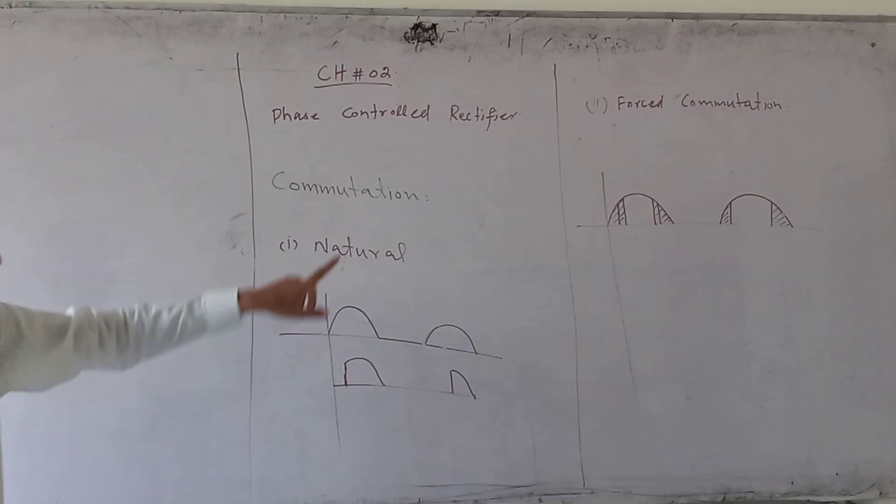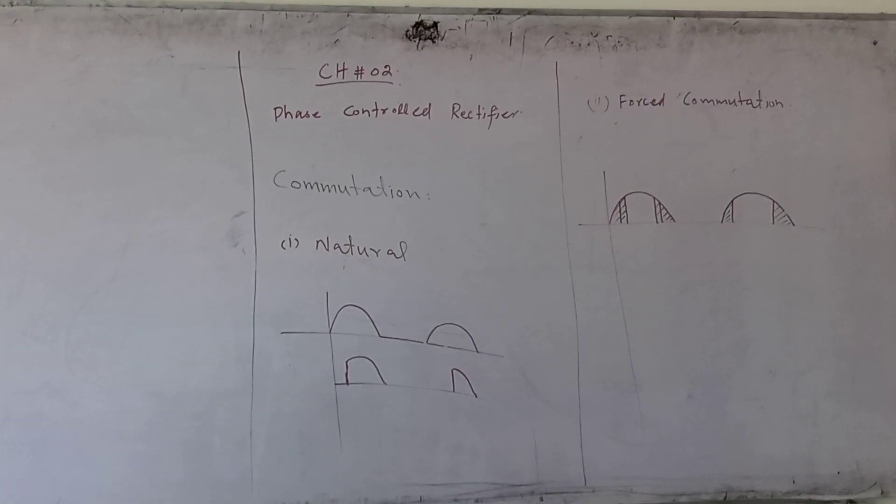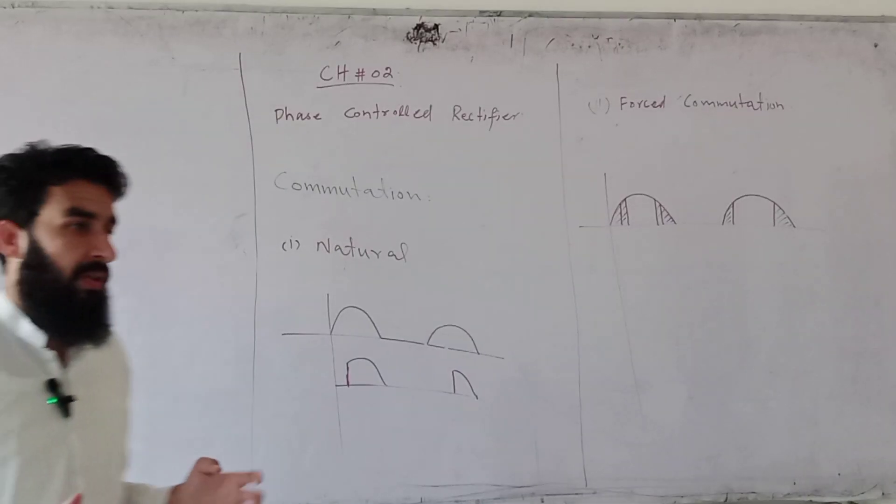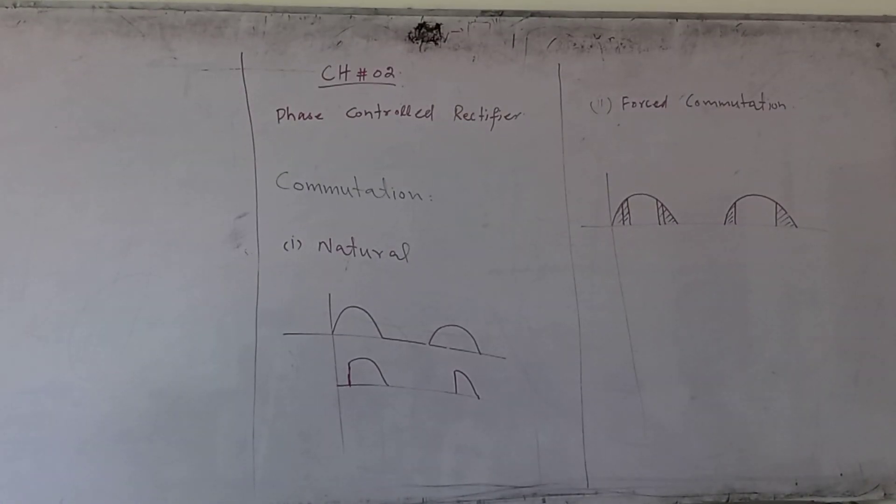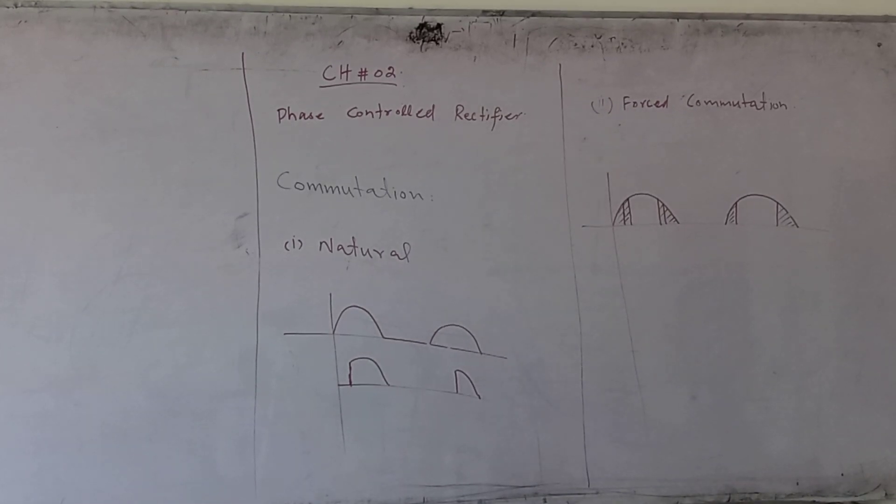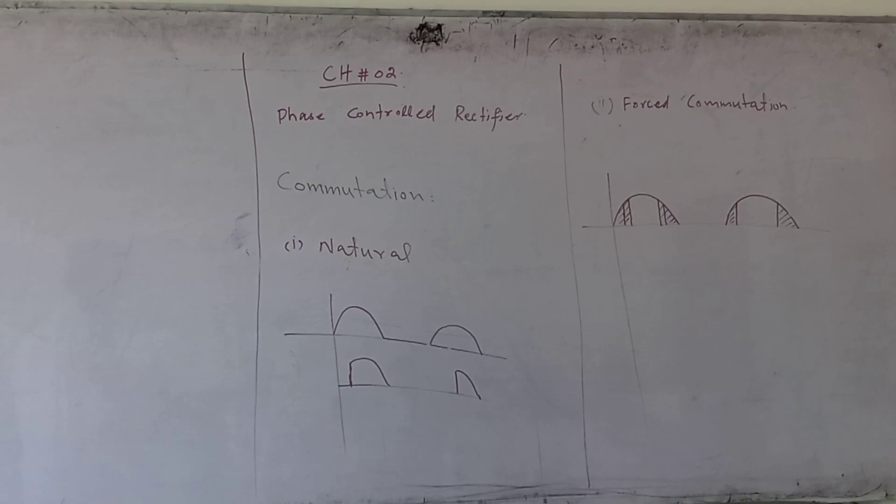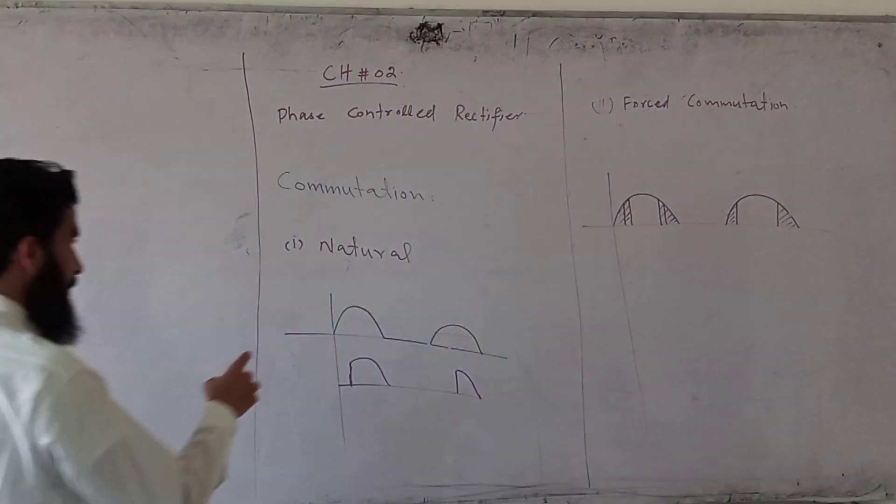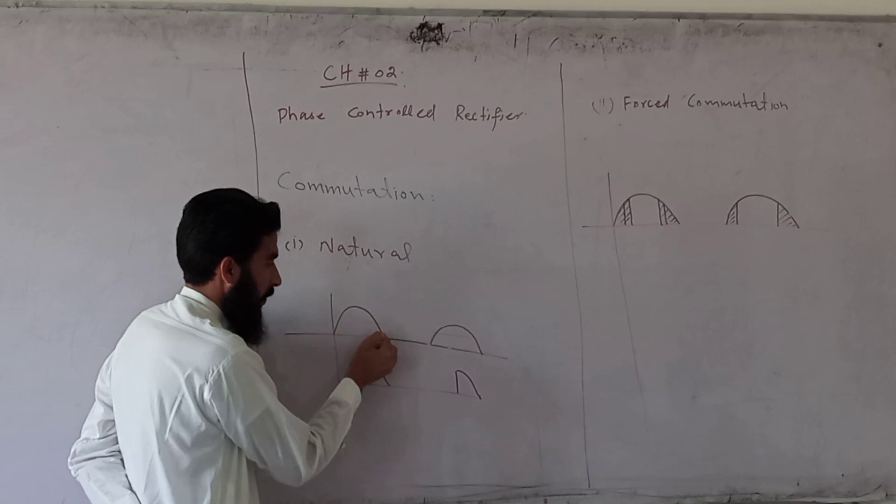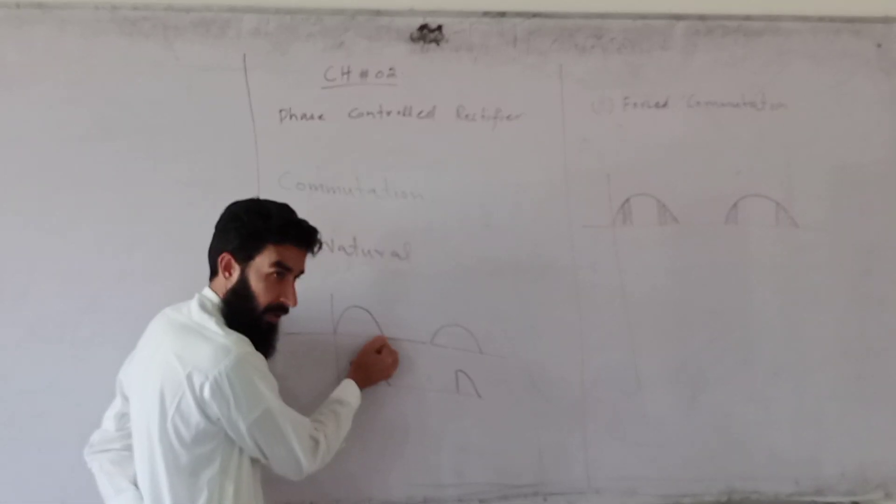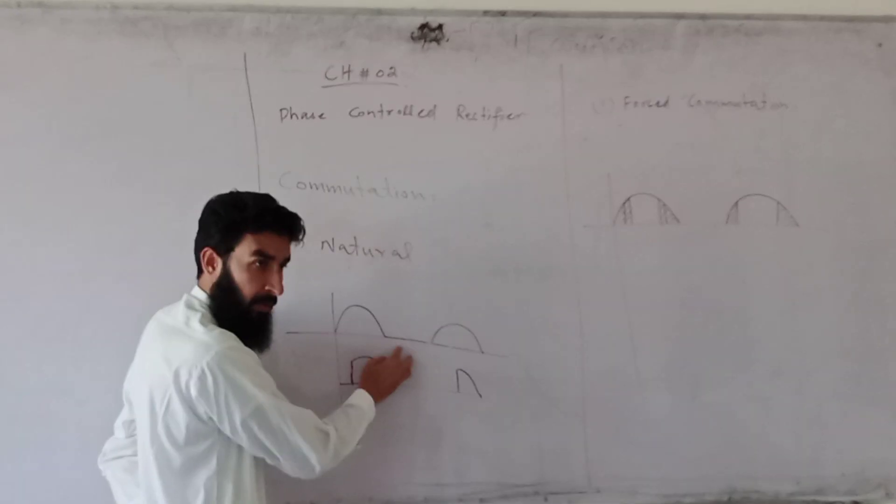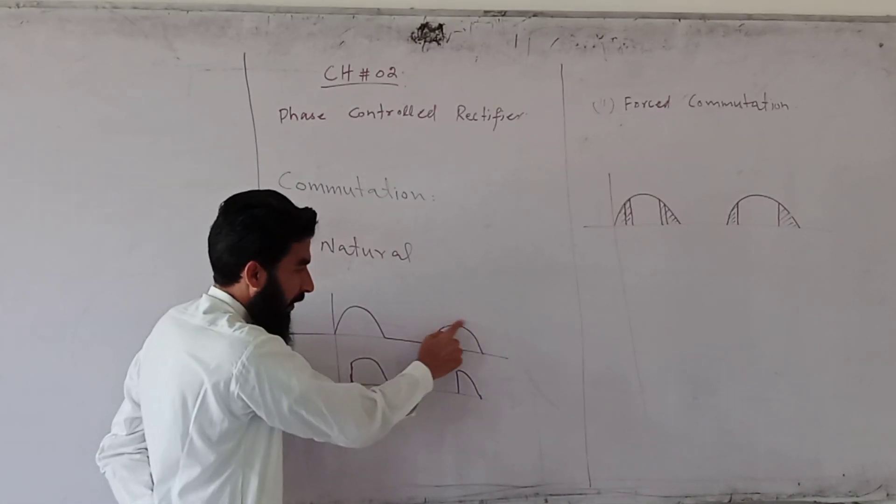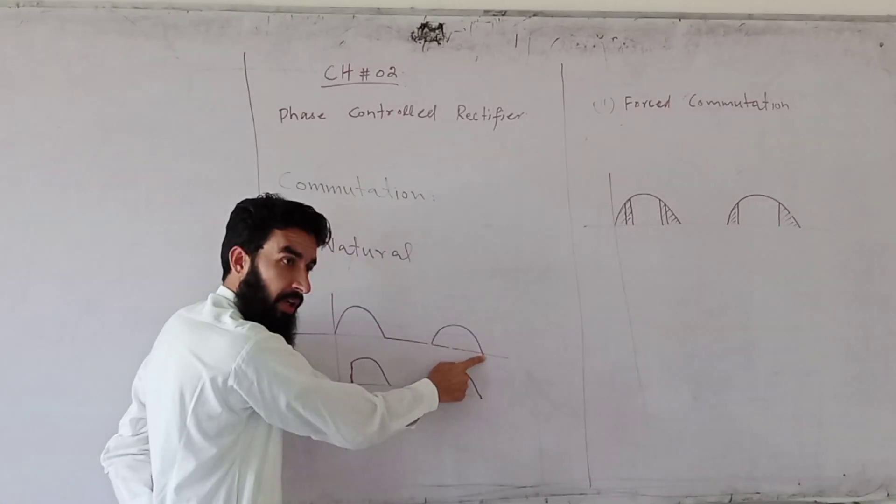Let's see the difference between natural and forced commutation. For natural commutation, when voltage crosses zero, it will start positive. If you are positive, you can block the negative and control the total output.